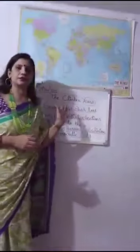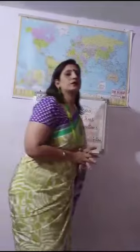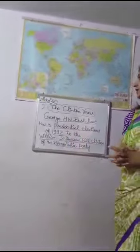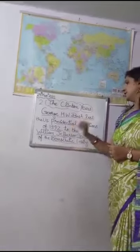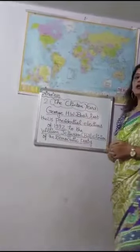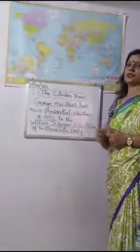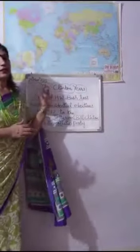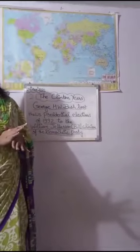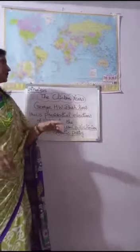The next topic of the same chapter is the Clinton years. The president of that time was George H.W. Bush, and he lost the US presidential elections of 1992 to William Jefferson Bill Clinton, popularly known as Bill Clinton, of the Democratic Party. During this era, it was believed that the US had withdrawn into its internal affairs and was not fully engaged in world politics.